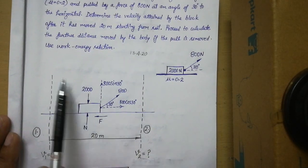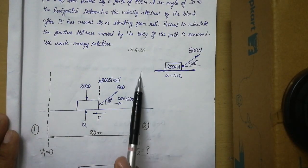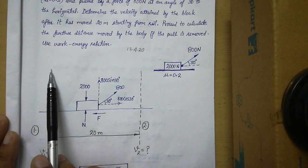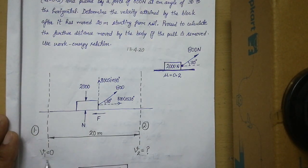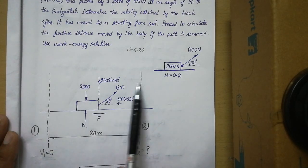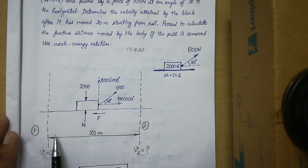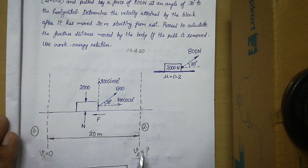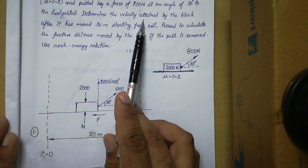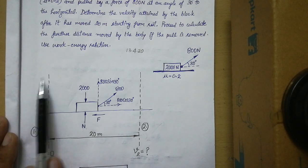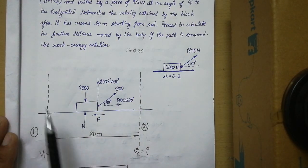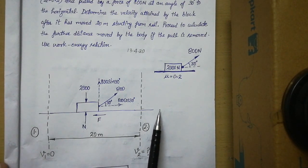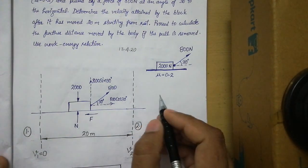In the free body of the block, five main forces are present: normal pressure, frictional force, horizontal component of 800 N force, vertical component of 800 N force, and weight acting downward. We also represent the two stages. At Stage 1 the block starts from rest so velocity is zero, the distance between Stage 1 and Stage 2 is 20 meters, and at Stage 2 the final velocity is v2 which we have to find.